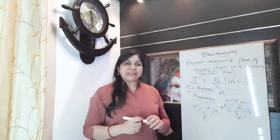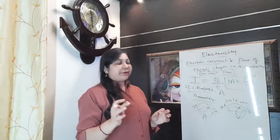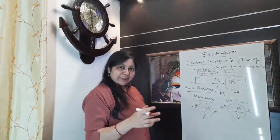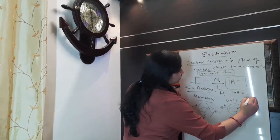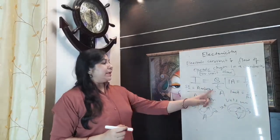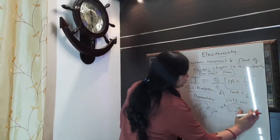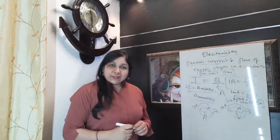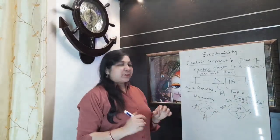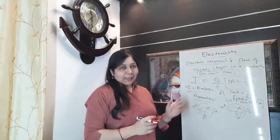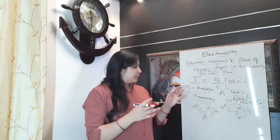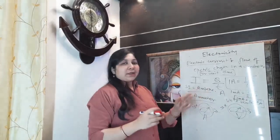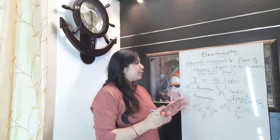We can also measure current in smaller units. The smallest commonly used unit of current is milliampere. 1 milliampere is equal to 1 by 1000 ampere, or 10 to the power minus 3 ampere. Ampere is quite a bigger unit. In day-to-day life and in numerical questions, you will mostly use ampere, but in some questions you will see milliampere, and you can convert it to ampere since ampere is the standard unit of current.